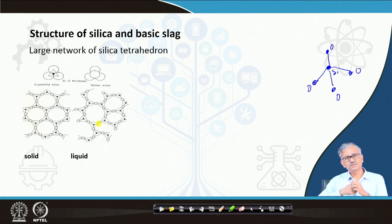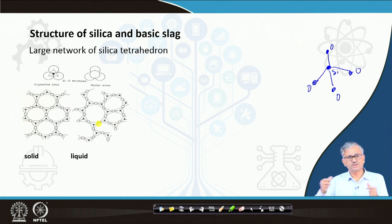As a result, silica melt is very viscous and a very high temperature is required to melt it.